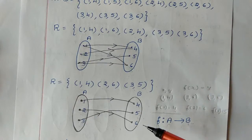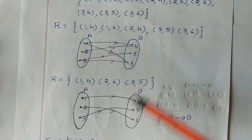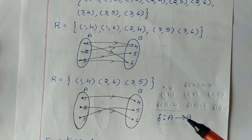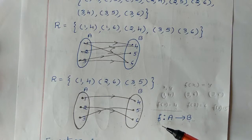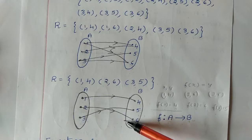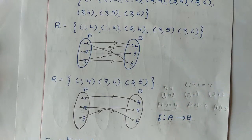Among these two relations, one is a function and another one is not a function. The function means it is a special type of relation. So every function is a relation, but we can't say that every relation is a function — it may be a function or it may not be a function.